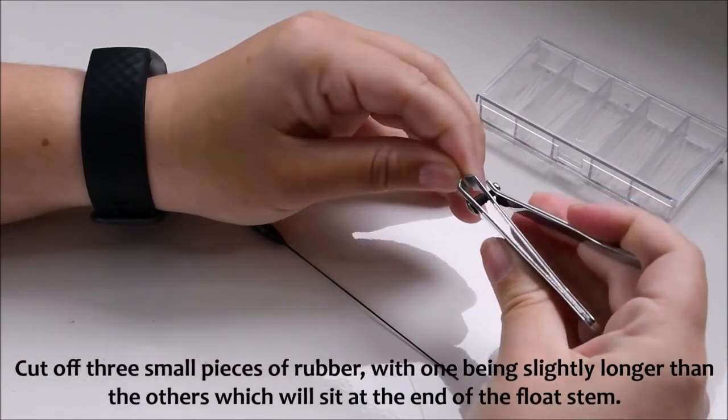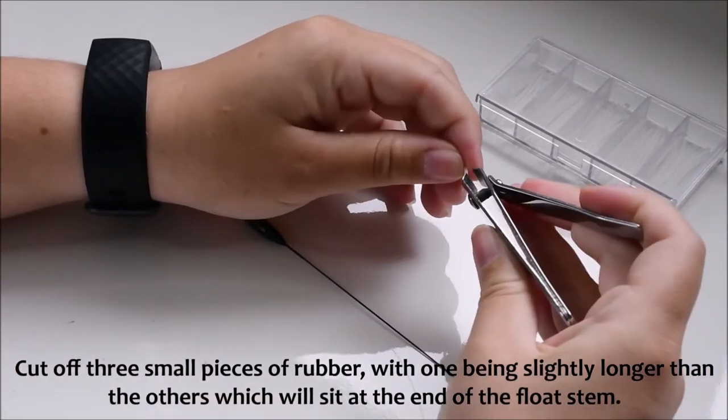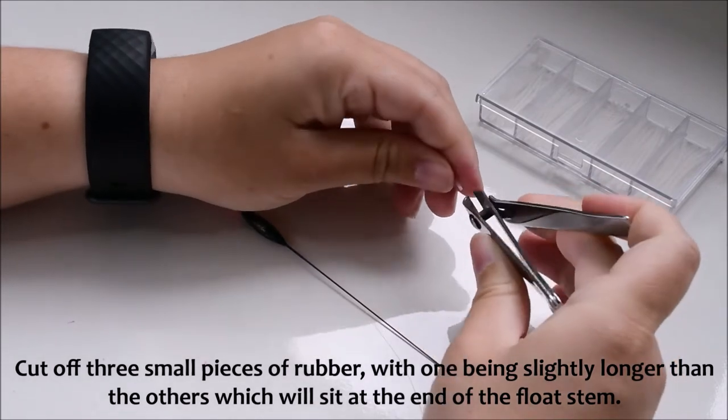Cut off three small pieces of rubber with one being slightly longer than the others which will sit at the end of the float stem.